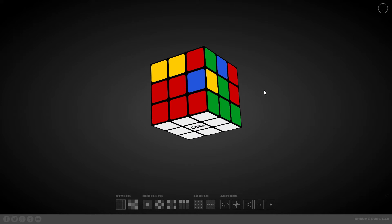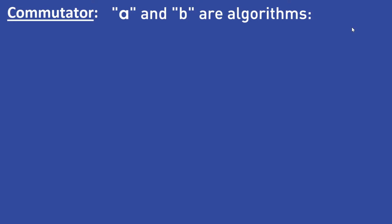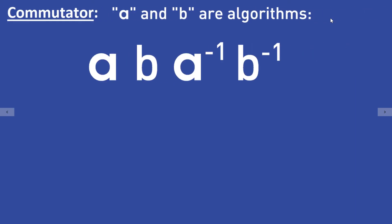First I will show you what a commutator is. If A and B are some algorithms, then the commutator of A and B is the following: you use algorithm A first, then algorithm B, after that you reverse algorithm A, and then you reverse algorithm B. That is the commutator of A and B.